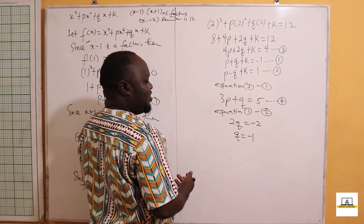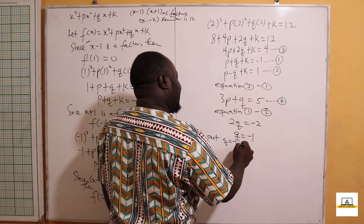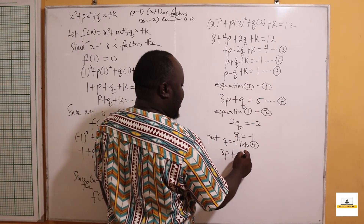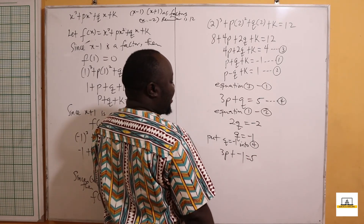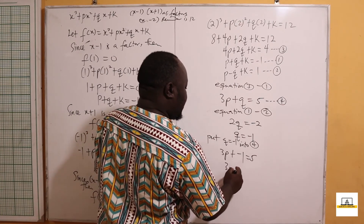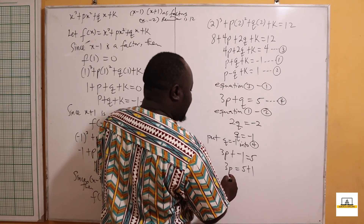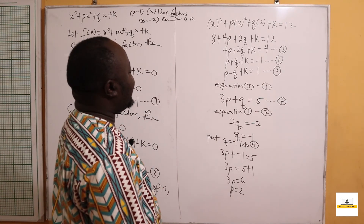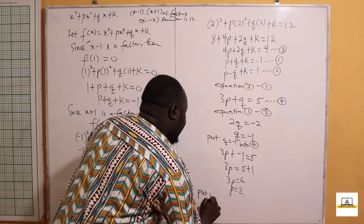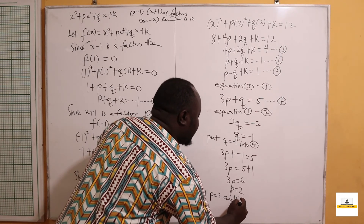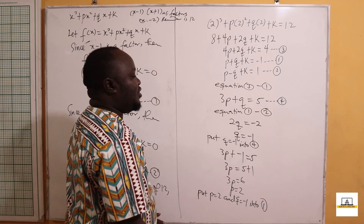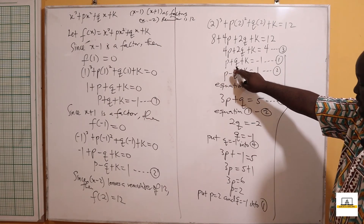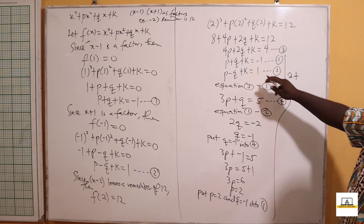Now that q = -1, we substitute into Equation 4 to find p. Putting q = -1 into 3p + q = 5: 3p + (-1) = 5, so 3p = 6, giving p = 2.